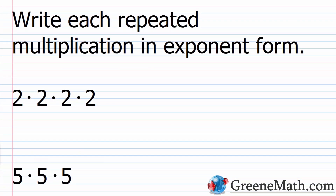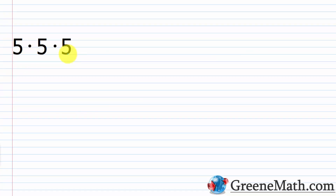Let's look at a simple example — we're going to write each repeated multiplication in exponent form. Starting with 2 times 2 times 2 times 2: we have 4 factors of 2, so we write this as 2 raised to the 4th power. The 2 is the base — it's the number multiplied by itself — and the 4 is the exponent. Then we have 5 times 5 times 5: 3 factors of 5, so we write 5 to the 3rd power, otherwise known as 5 cubed. If something is raised to the 2nd power you say it's squared; raised to the 3rd power you say it's cubed.